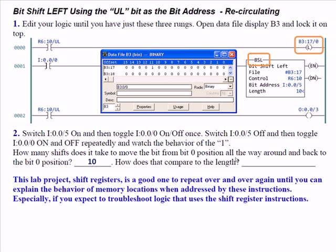The 10 shifts equal the length — the bits recirculate until overwritten with a 0. A practical application is a rotary index table with 10 positions: when a product is loaded into a position, you put a 1 in that station (stations 0 through 9). As it continuously rotates, occasionally a product is taken off and a 0 is written to that position, but the table recirculates continually — so you're not shifting products off the rotary index table, they just keep going around.